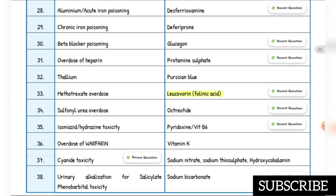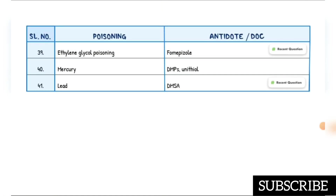Urinary alkalization for salicylate and phenobarbital toxicity — antidote is sodium bicarbonate. Ethylene glycol poisoning — antidote is fomepizole. Mercury poisoning — antidote is DMPS or unithiol. Lead poisoning — antidote is DMSA.